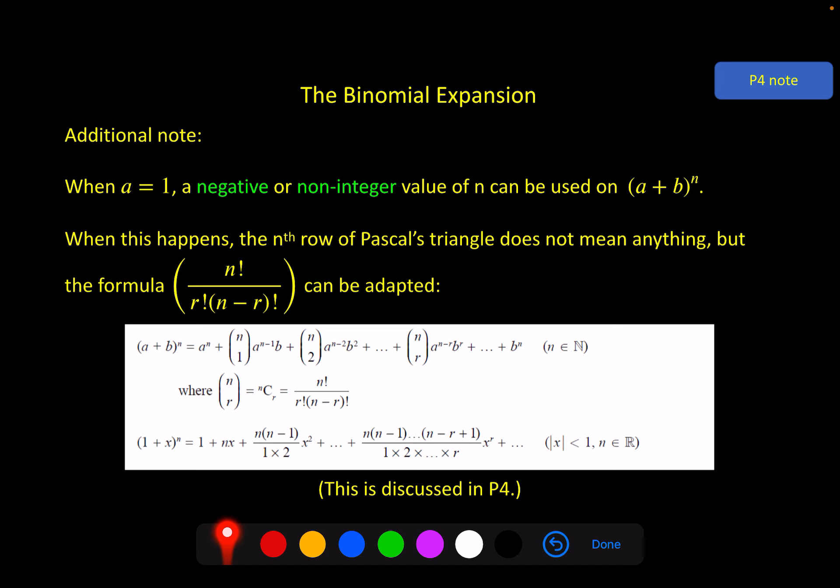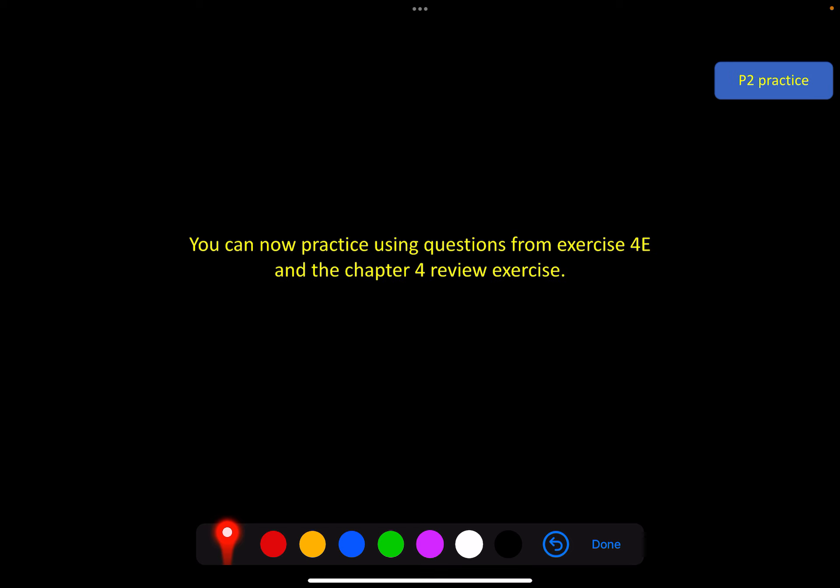So there you go. There is a chapter on the binomial theorem. And you can now practice using questions from exercise 4e for this specific idea of using the formula for approximations. And you can do the chapter 4 review exercise, which will cover the whole chapter. And perhaps I will see you in another video.